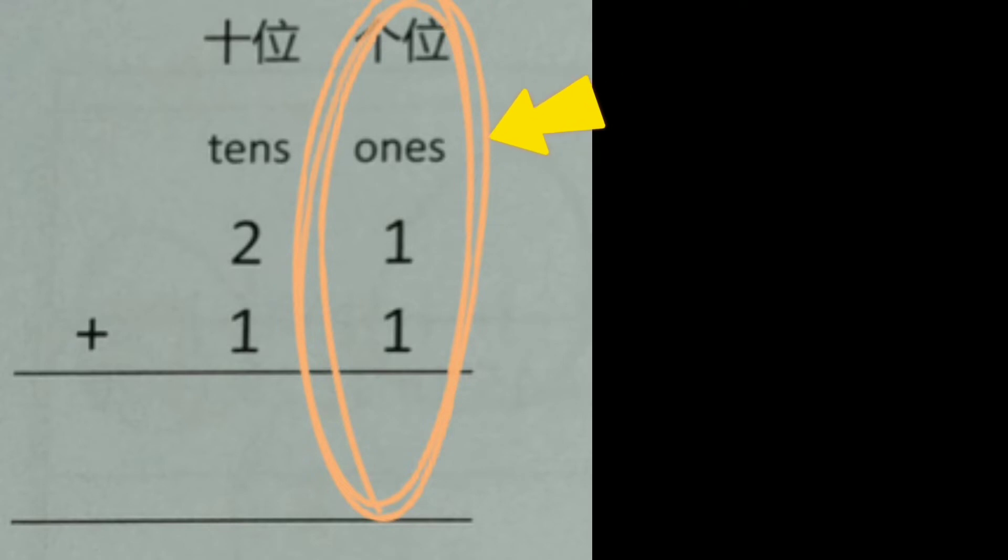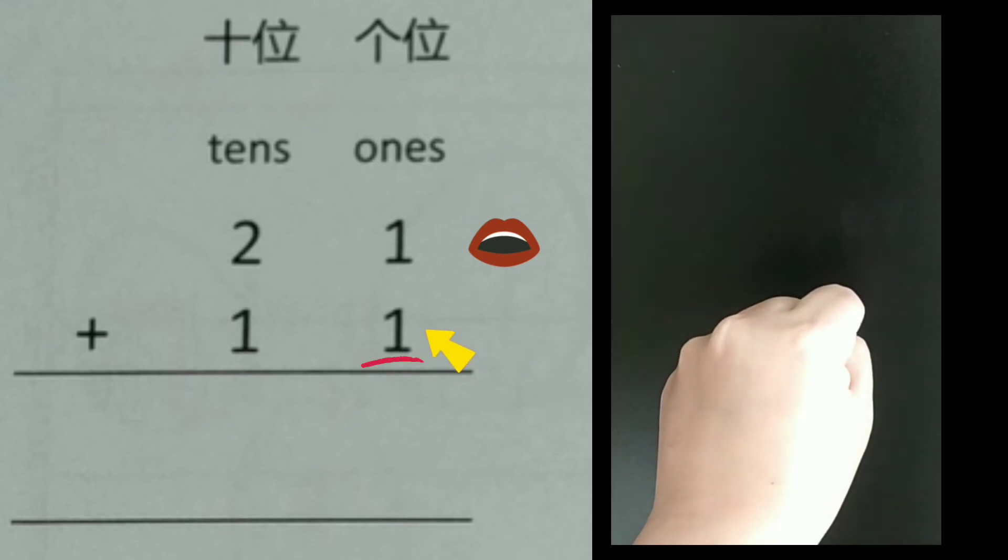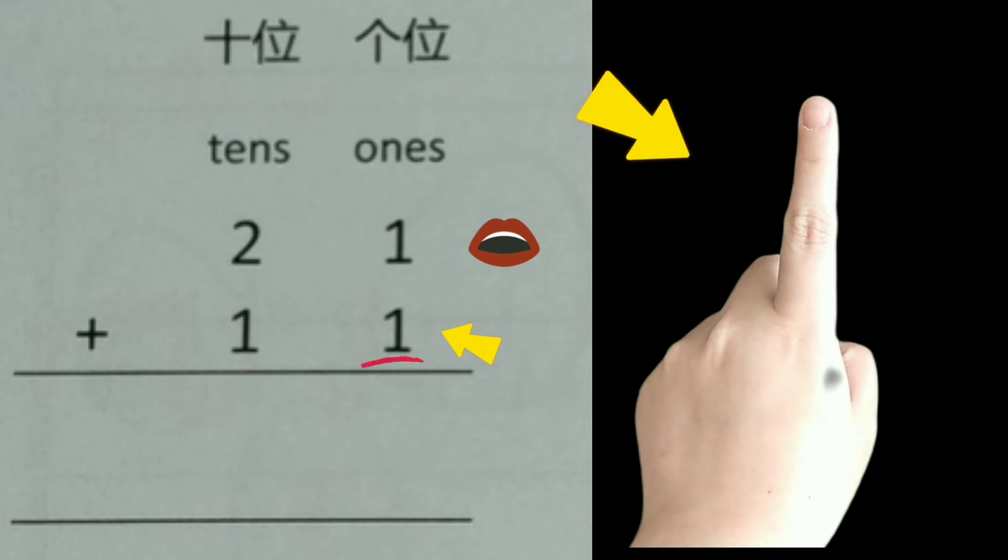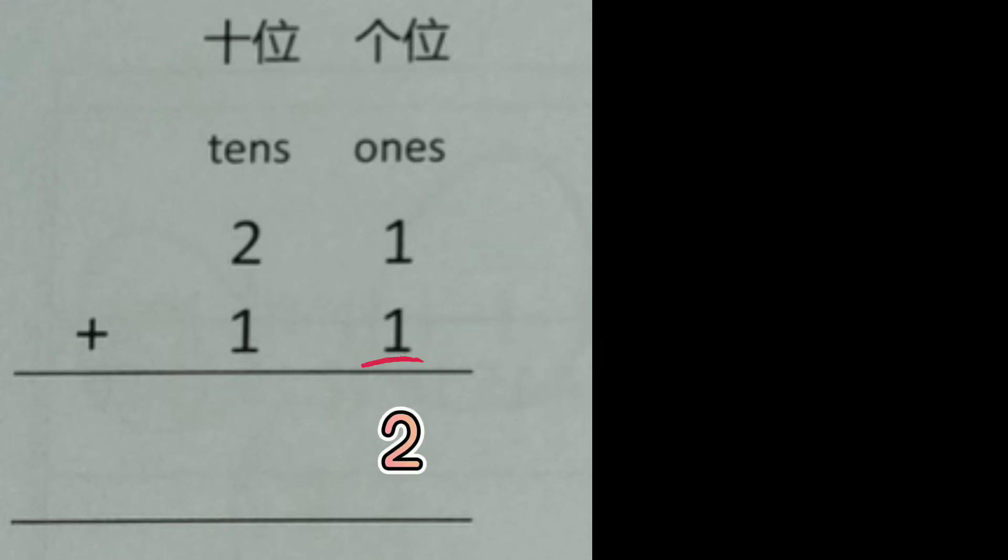Always start the ones column first. 1 plus 1 equals how many? We have the same number at the columns of ones, so we will underline the second number. Put one in your mouth, the other one show on your finger. Let's count: 1, 2. So the answer is 2.